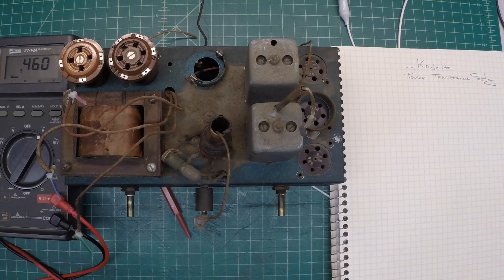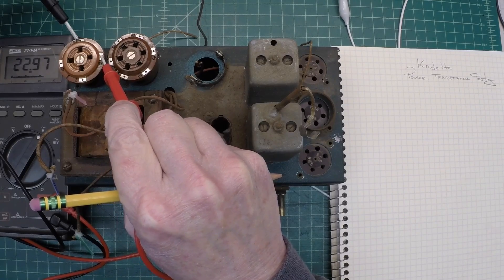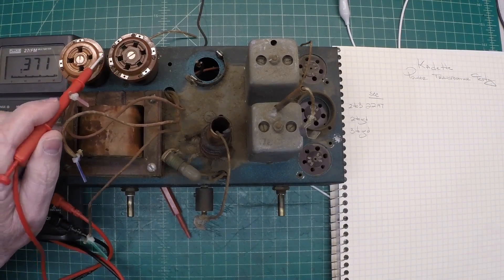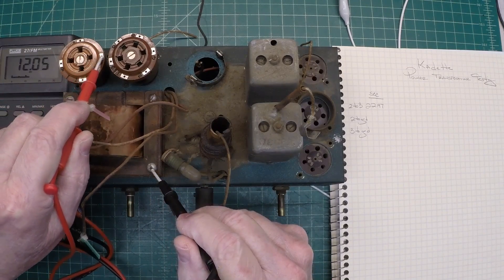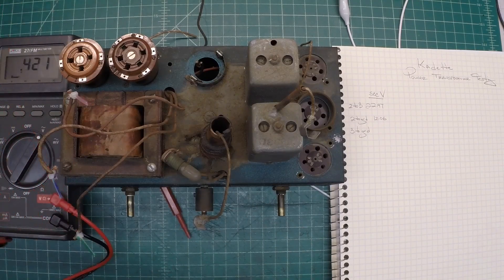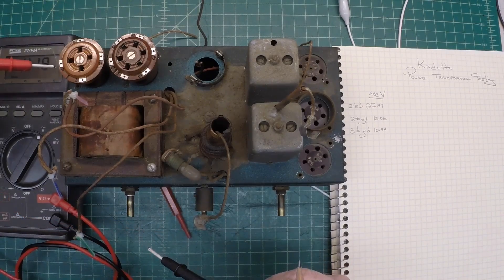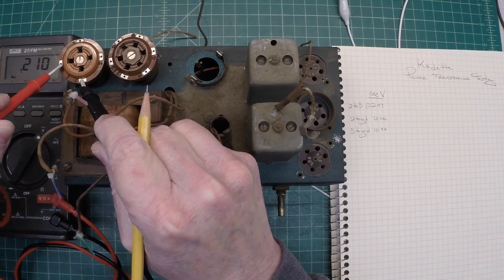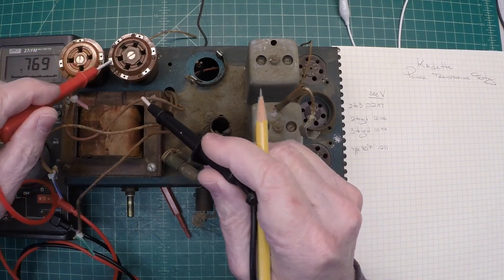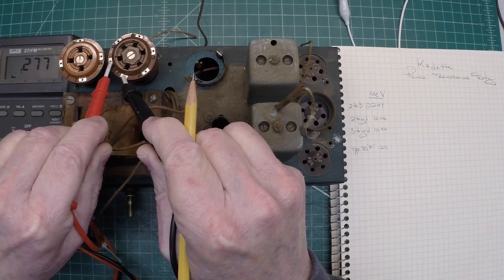Take note of what we see there. I'm going to record that - 22.97. Now let's go from pin two to ground, 12.06 we'll call it. We'll repeat that for pin three, 10.94. Let's do the same exercise for pins one to four, which will be the filament of the type 80 - 0.211. Moving along here, pins six to one on the type 41 tube to read the heater string - we're reading 0.277.